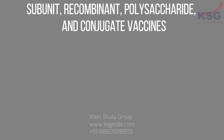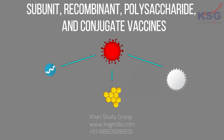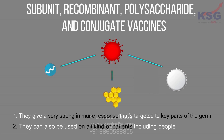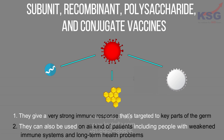Subunit, recombinant, polysaccharide, and conjugate vaccines use specific pieces of the germ, like its protein, sugar, or capsid, which is a casing around the germ. Because these vaccines use only specific pieces of the germ, they give a very strong immune response targeted to key parts of the germ. They can also be used on all kinds of patients, including people with weakened immune systems and long-term health problems.